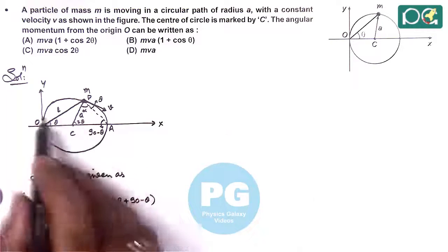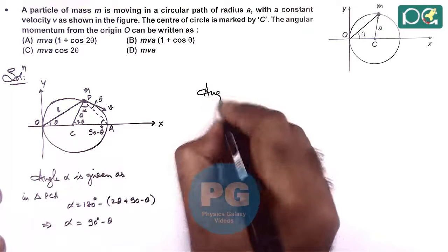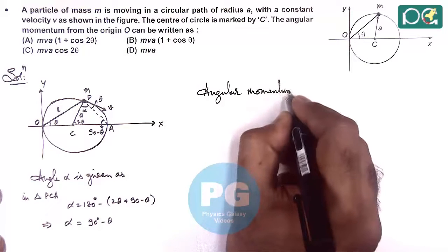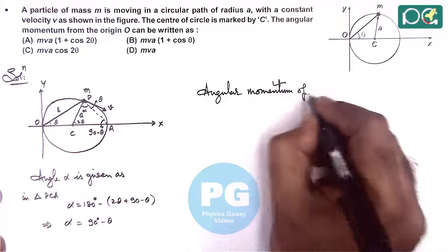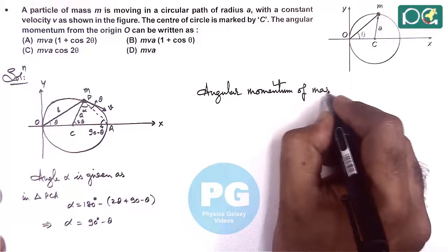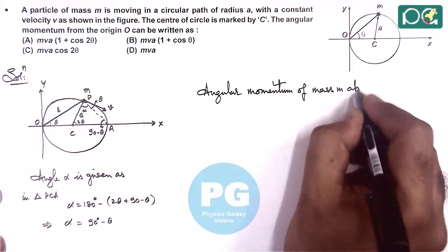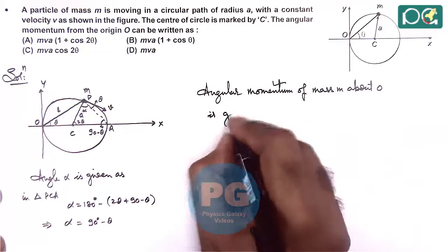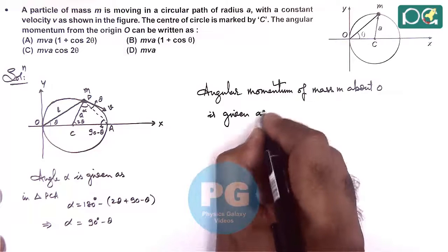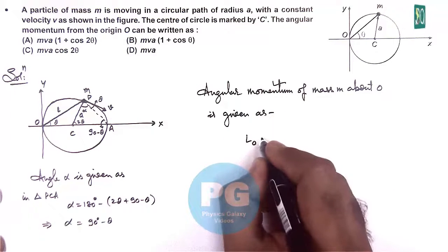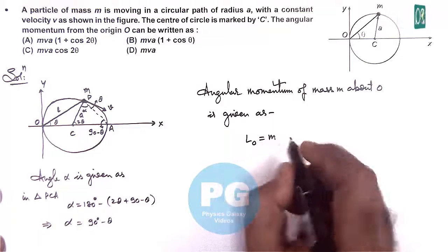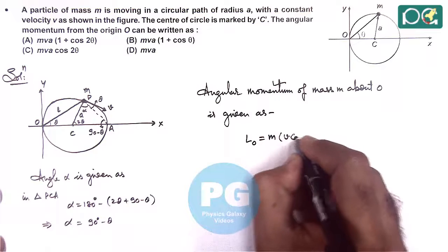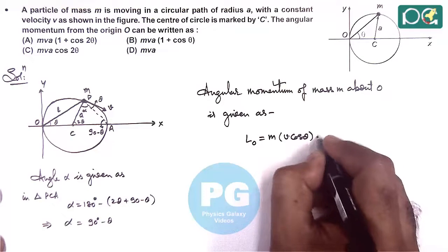So here if we wish to calculate the angular momentum, angular momentum of mass M about O, then it is given as we can write angular momentum about O is given as M, the perpendicular velocity component here is V cos theta, multiplied by L.